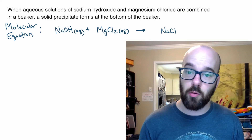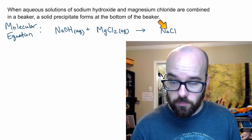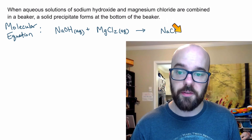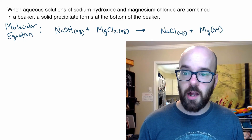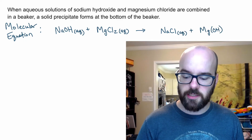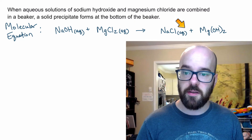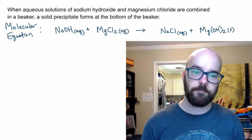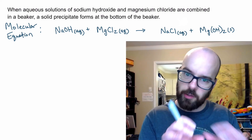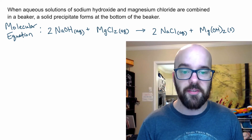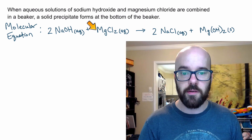Our products are sodium chloride — sodium always forms soluble salts, so this will be aqueous; anything with sodium in it will be aqueous. And magnesium hydroxide: hydroxide has a −1 charge so we need two of them, Mg(OH)₂. That must be our solid precipitate. That's our molecular equation. We also need to balance it: a 2 in front of NaOH and a 2 in front of NaCl balances out all of our ions.